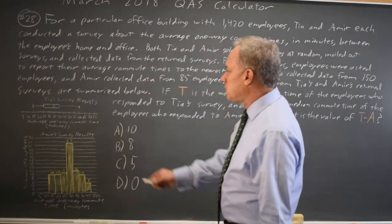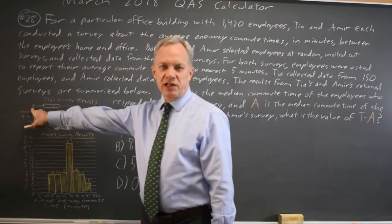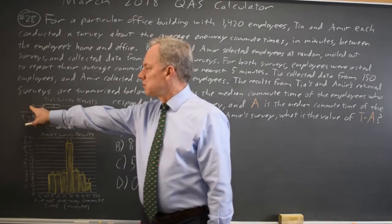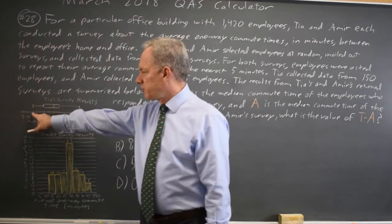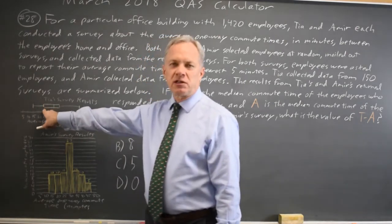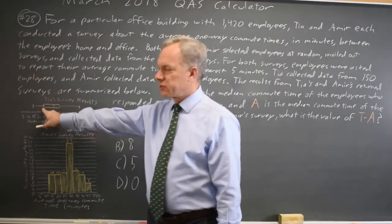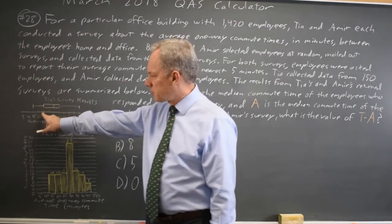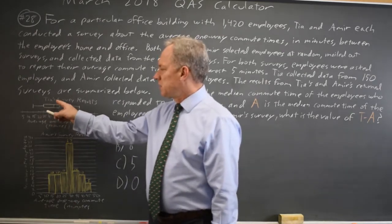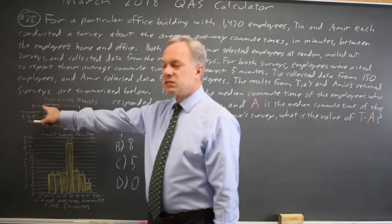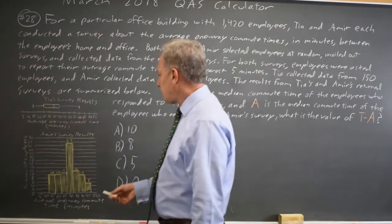For a box plot, the minimum is the vertical line at the end of the lower line, and that's 15. The first quartile, the 25th percentile, is where the wide box starts, and that is 25 for TIA. The median is the vertical line inside the rectangle, and that's 35.